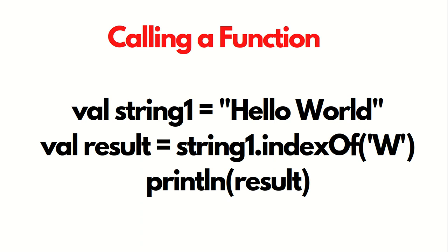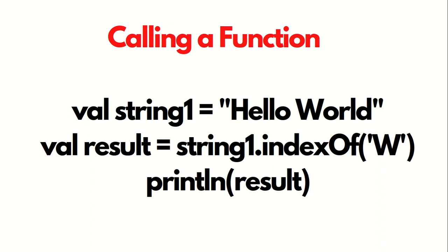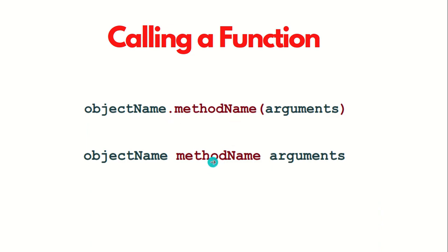This is the way in which we use the operator notation: object name space method name space argument. This one is equivalent to the first syntax. This is the first syntax example and this is the second syntax example.